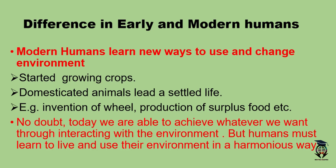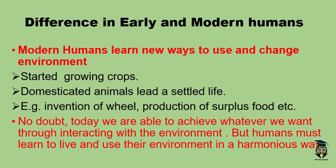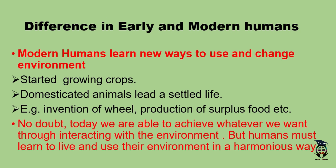Early humans were only hunting and killing animals. They domesticated animals and began to settle. The early humans lived nomadic lives — they were not settled in one place and were always moving from one place to another. But modern humans live a settled life in one place, and they modify their environment to fulfill their needs. For example, the invention of the wheel and the production of surplus food — these were some of the key evolutions that humans made from the early to the modern period.